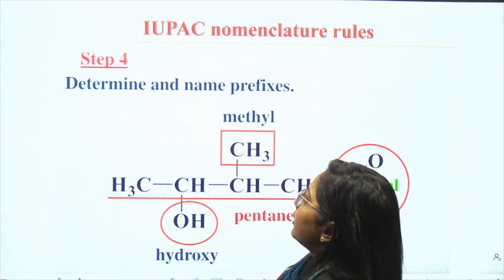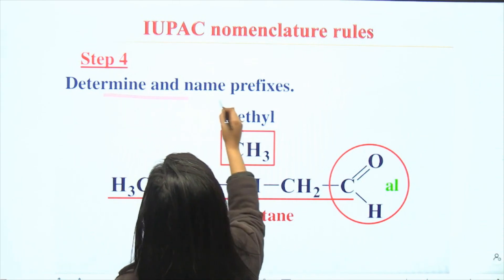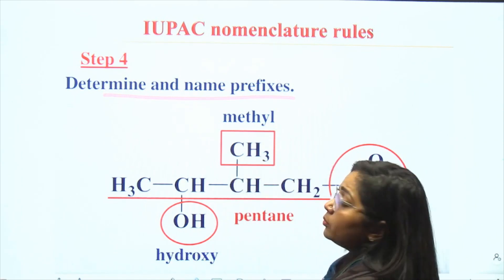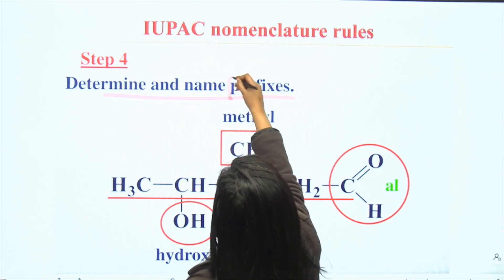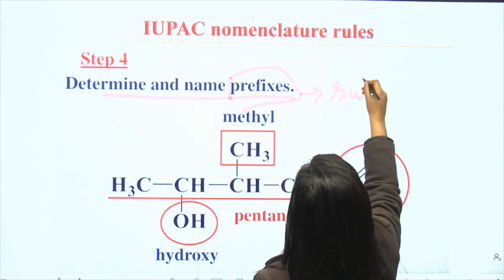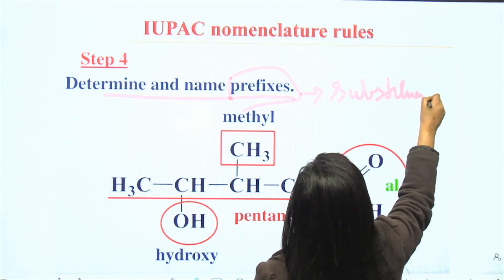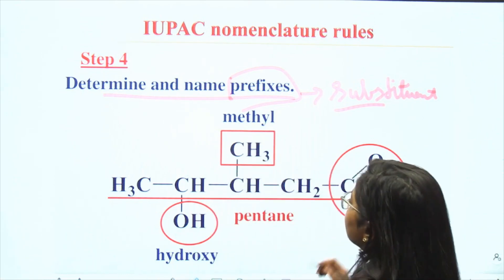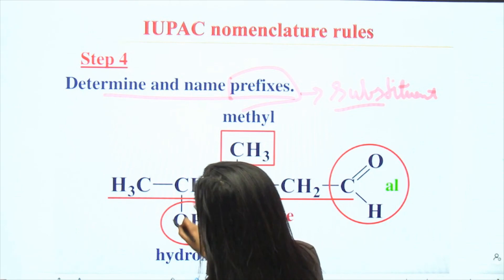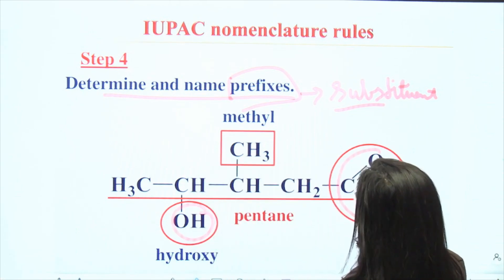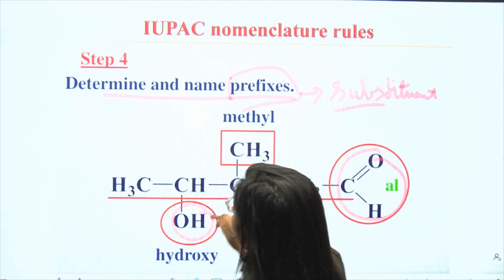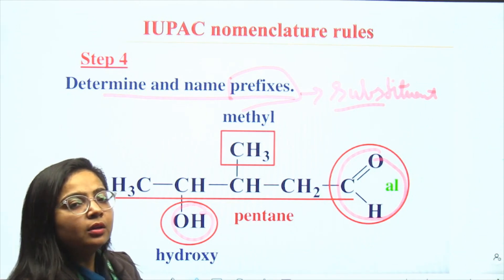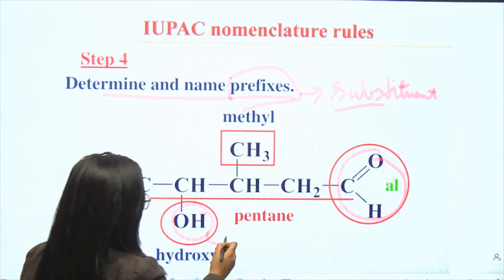The fourth step is to determine and name the prefix — that is, what prefix we have to give this compound. Basically, the prefix we give is the substituent. The substituent that is attached to the main principal chain is used as the prefix in the name of that compound. In this compound, the functional groups are the hydroxyl and the carbonyl. The basic rule is that we can use only one functional group as the main functional group, and the rest will be used as substituents.